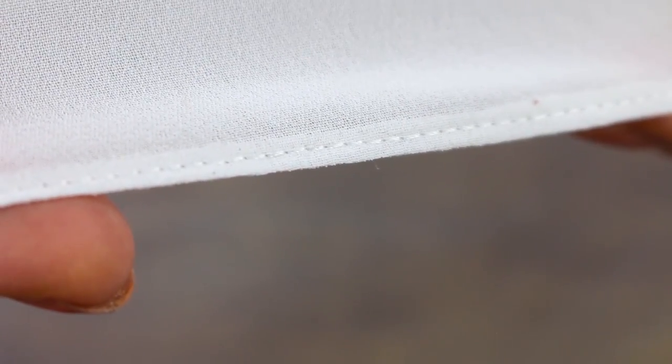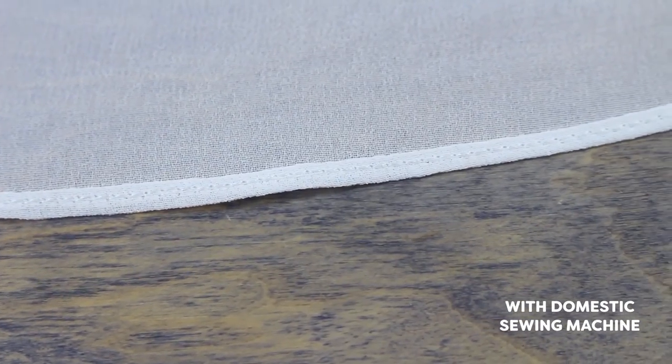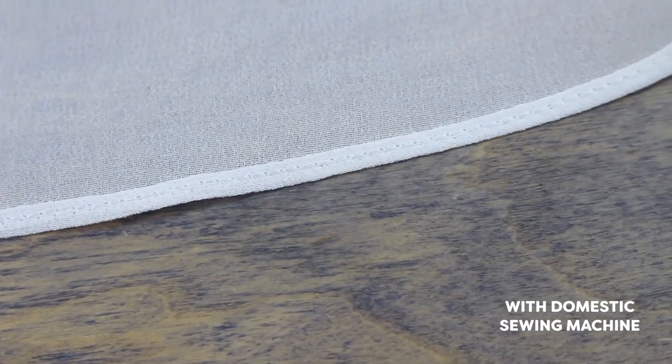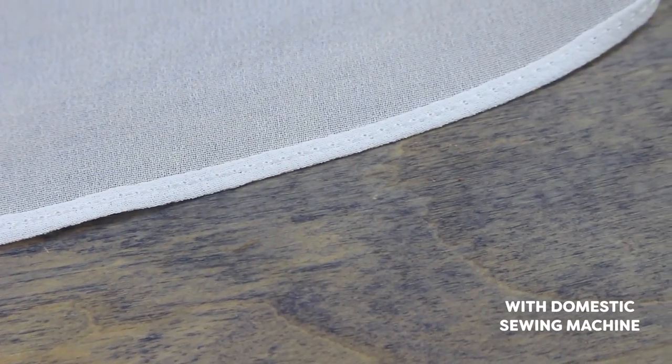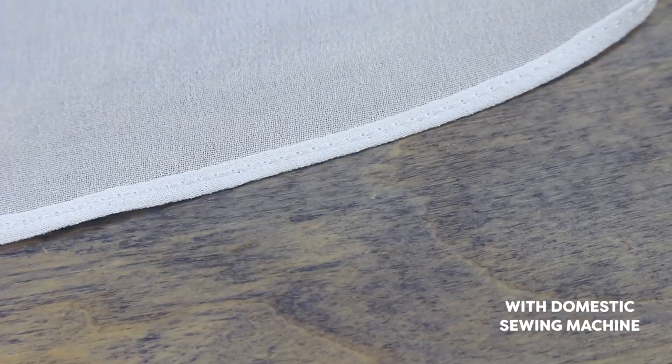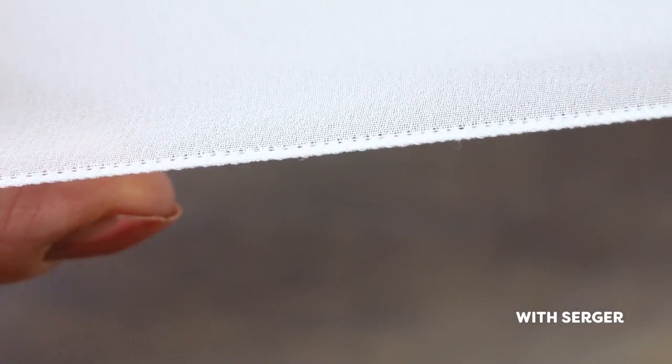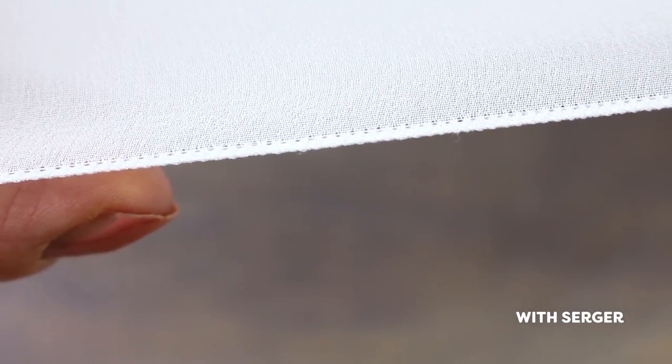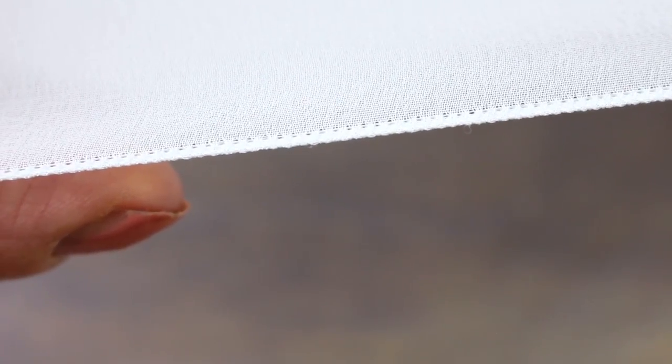As most hems have a curved edge, doing the hem in a two step process keeps your hem even and consistent and eliminates any problems. These materials combined with these simple techniques are all you need for perfect professional hemming.